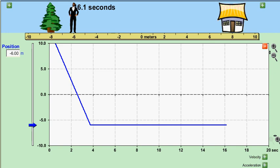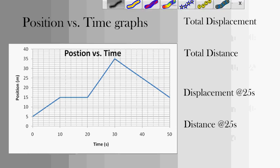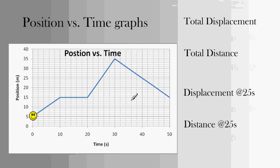Going back, when we look at this position versus time graph, we can find the total displacement pretty easily. All we really have to do is look at the beginning point, which is 5, to the end point, which is 15. And that gets me a total displacement of 15 minus 5 is 10 meters.